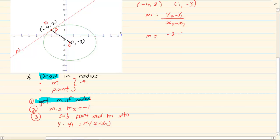By substitution, we have minus 3 minus 2 all over 1 plus 4. Our final answer is minus 1.